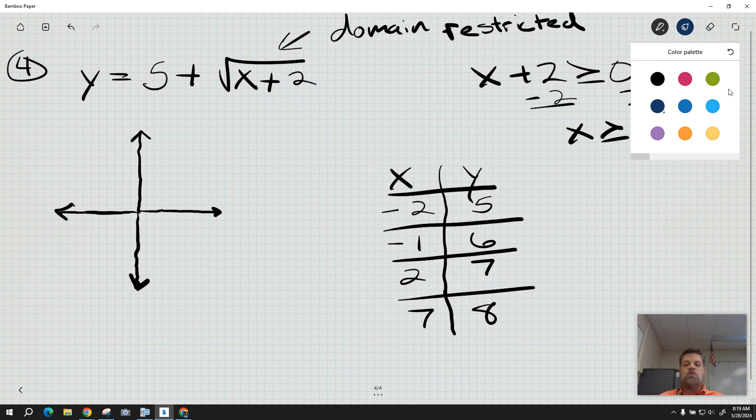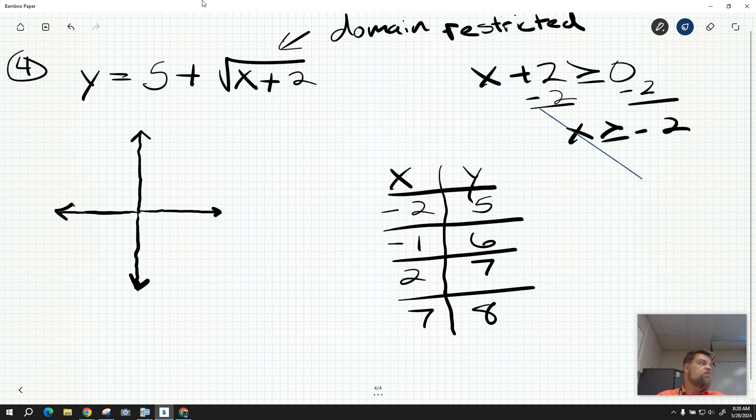So then I just plot those points. I'm going to go to negative 2, so I go over to negative 2 and then up to 5. So that's the point negative 2 comma 5. Then at negative 1, it goes up to 6. Then at 2, I go up to 7. And then at 7, I go up to 8.